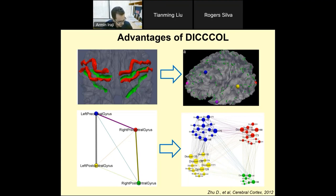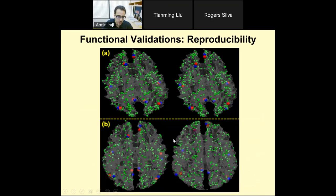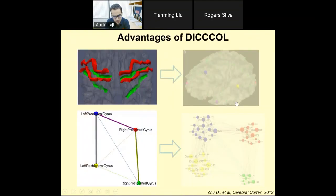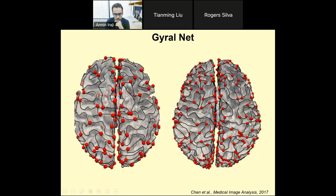Another question: what are the highly variable blue three-hinge gyri across individuals? The variability is very large. For example, in the posterior central gyrus, one brain folds one way and another goes completely straight. The shape is extremely variable. Defining common versus varied patterns in the gyra net is really a daunting task — that's exactly what we are working on right now, and it's very hard to tell definitively at this moment.